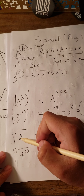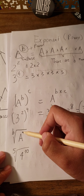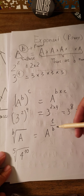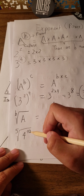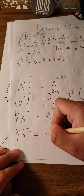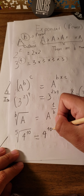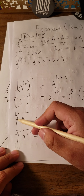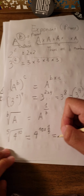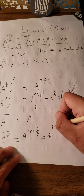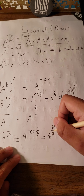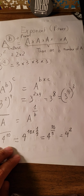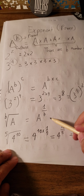The next one: if a is under the root of P, that means we have a^(1/P). For example, we have the 5th root of (4^10), so we have 4 multiplied by 10 with 1 over 5 — using this formula, that gives us 4^(10/5), which equals 4^2.